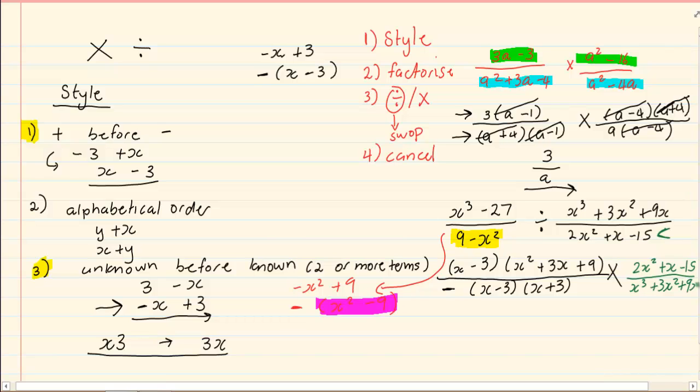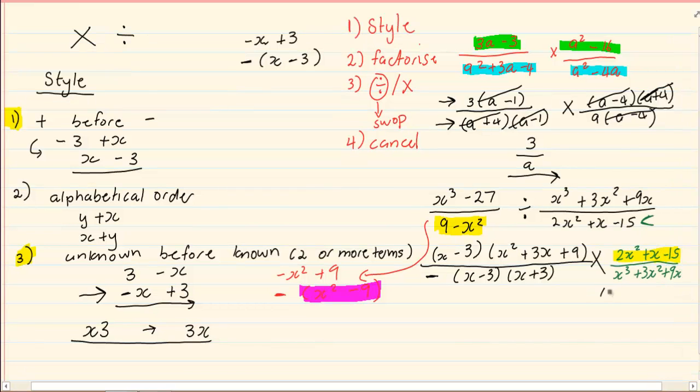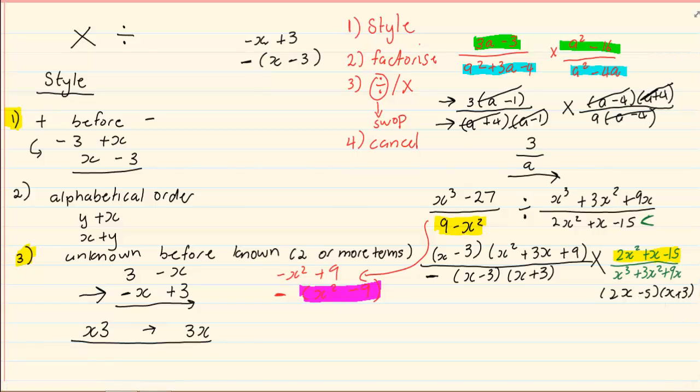To factorize 2x squared plus x minus 15, we have 2x minus 5 and x plus 3. Right. And when we factorize x cubed plus 3x squared plus 9x, we can see there is a common x. So I'm left with x into x squared plus 3x plus 9.